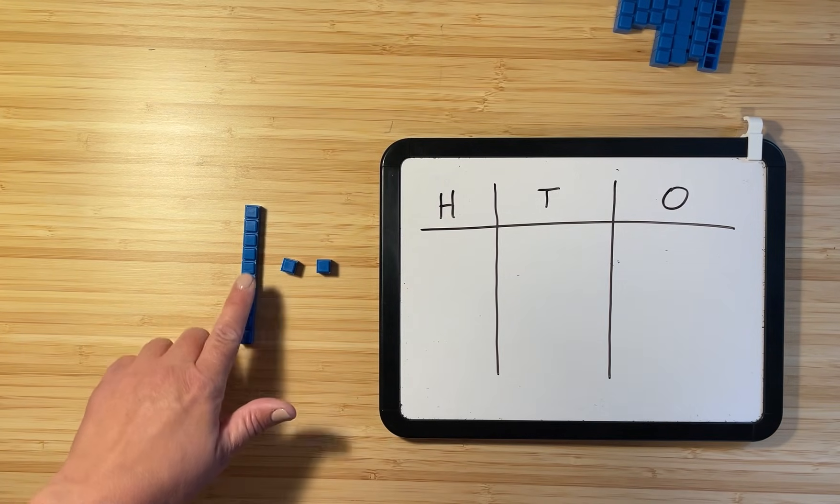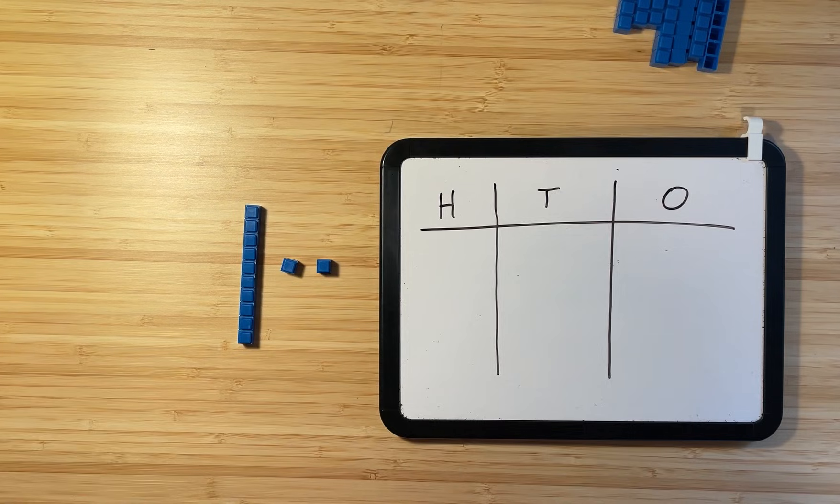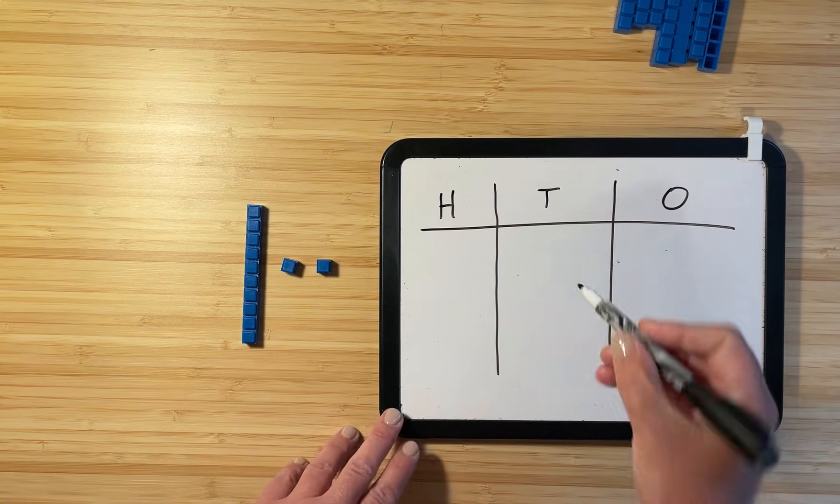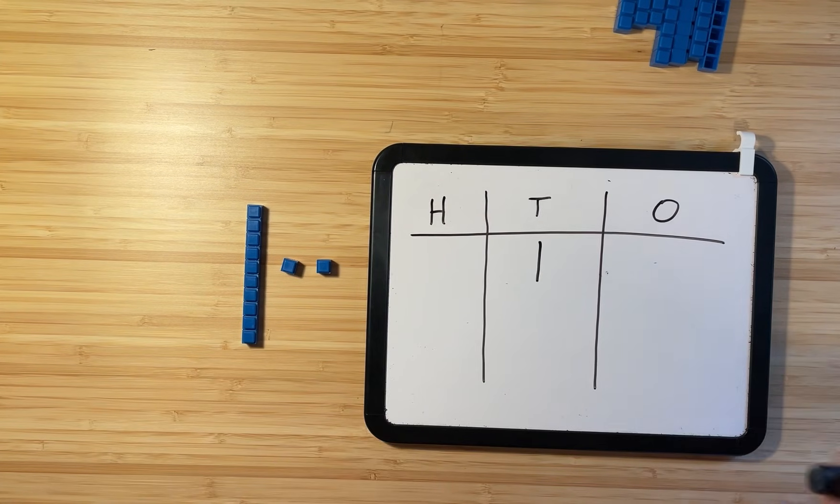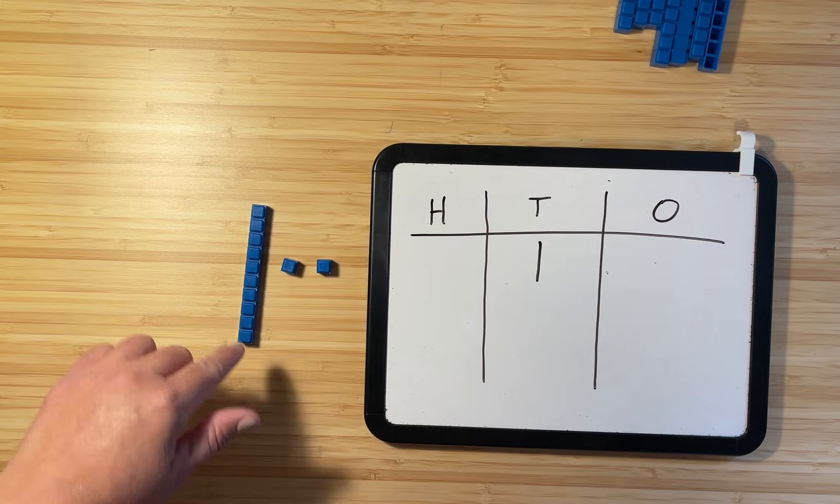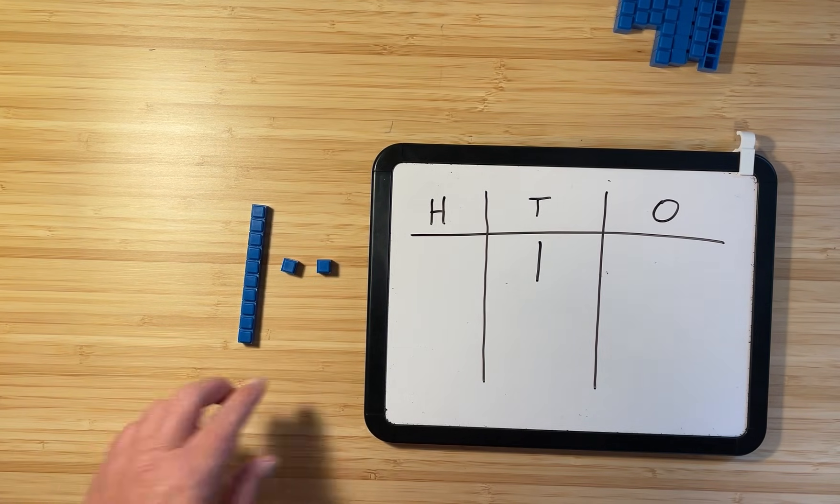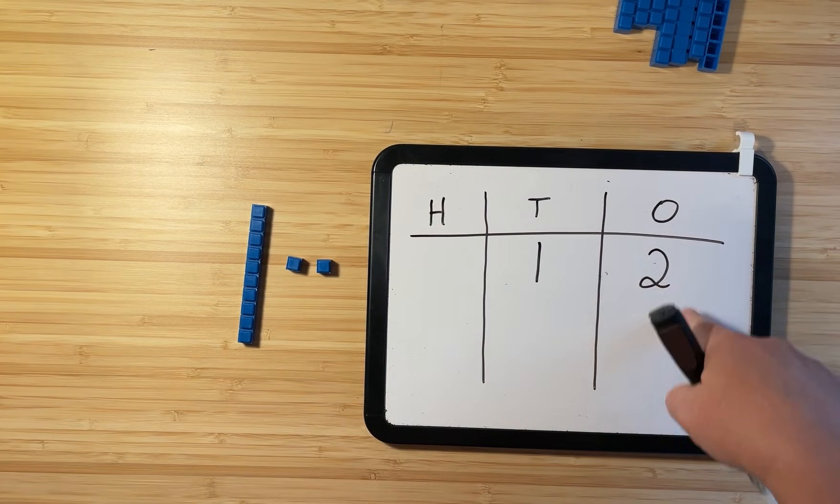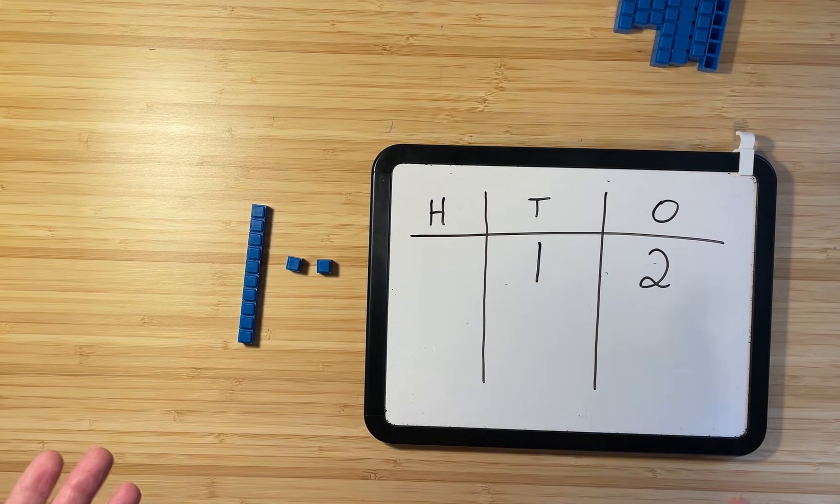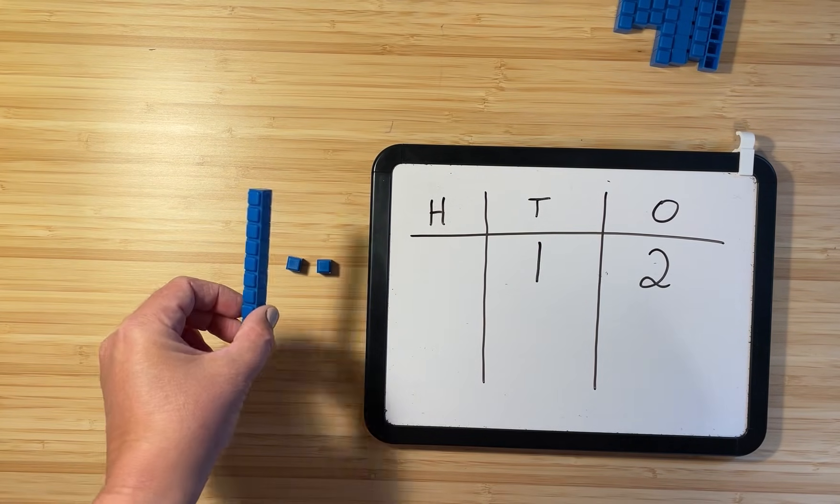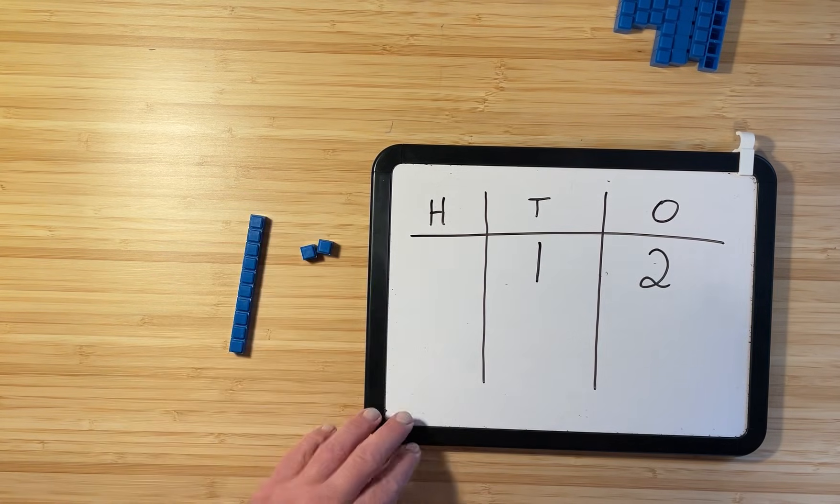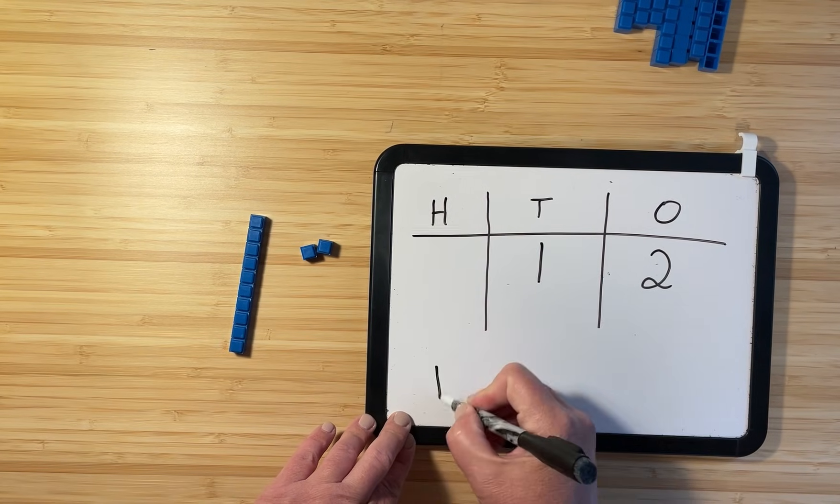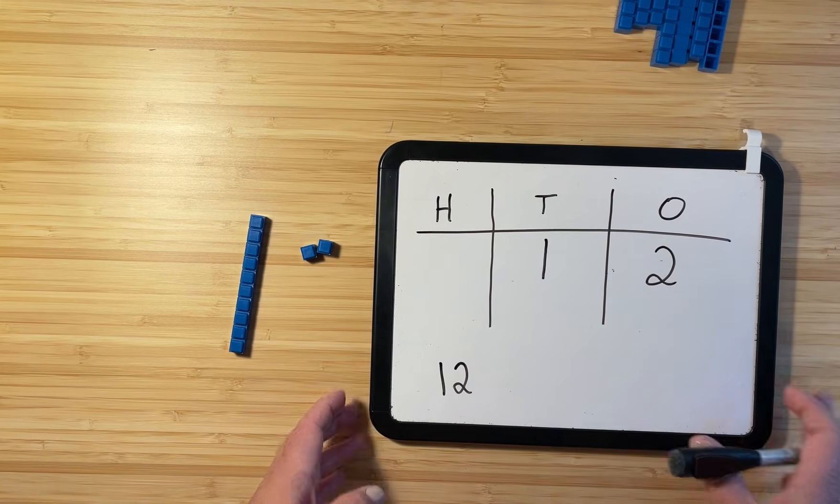When we build the number 12, how many tens do we have? We can see that we have one 10. So we're going to write the one in the tens column. In the number 12, how many ones do we have? We have two ones. So we are going to write a two in the ones column. You can see that the number 12 is built by using one group of 10 and two ones. If we were just going to write the number 12, not in a place value chart, it just looks like this.